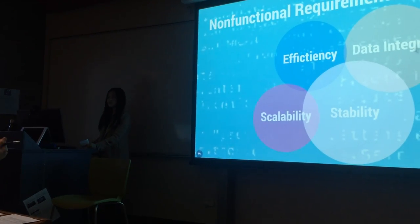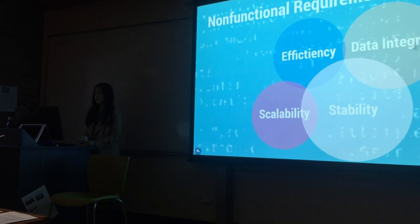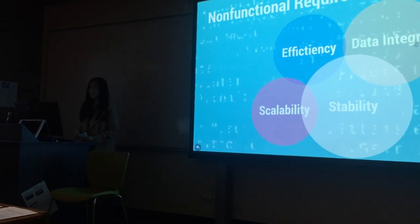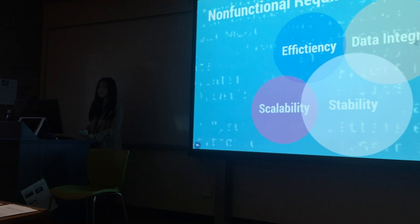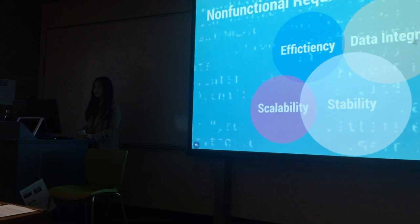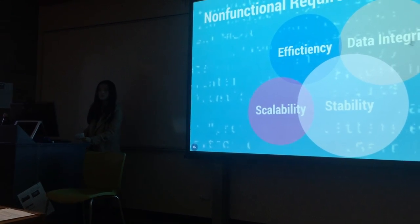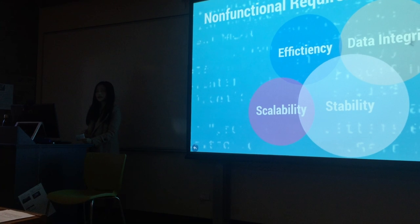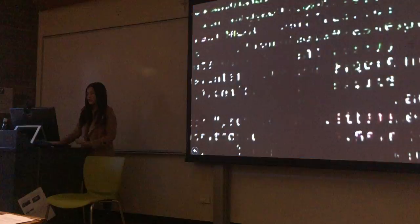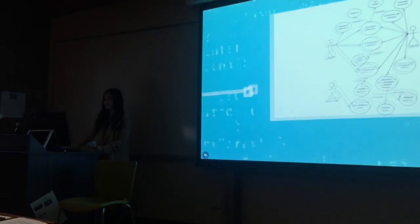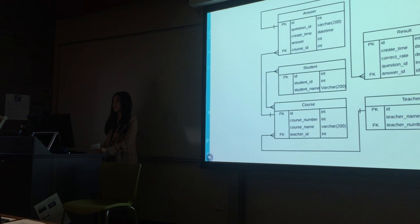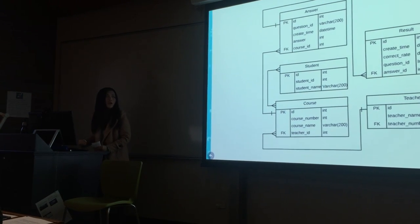There are also some non-functional requirements, namely efficiency, stability, scalability, and security. For example, the system should remain stable and function normally with 100 concurrent users, and the system should be able to be extended with additional modules written in Python. Here are some diagrams — this is the use case diagram, and this is the entity-relationship diagram, which the data model is defined based on.